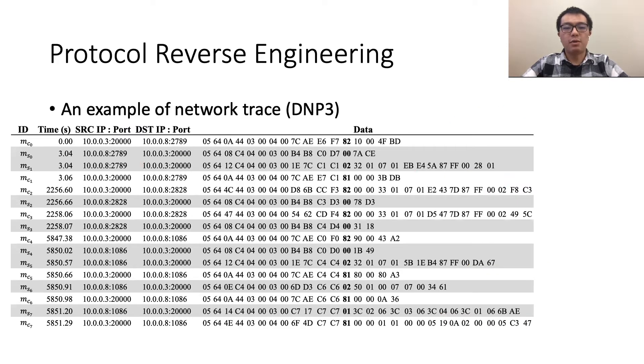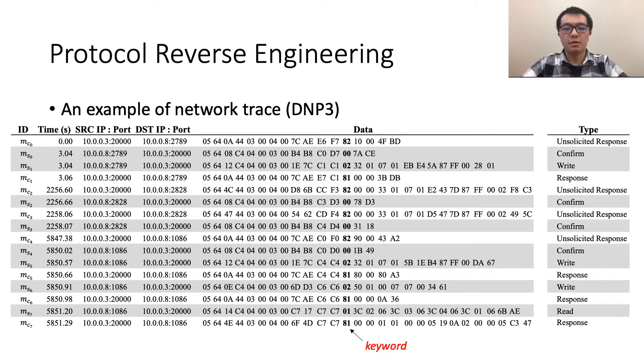Let's look at an example trace of DNP3. Each row contains a message. The plain messages are from the client, and the shaded messages are from the server. The message data is composed of several fields. The bytes in bold are a specific field called the keyword, which denotes the message type. The message type is defined by the specification and unknown in the trace. Each message type has its own format, which defines the syntax of this type. The main goal of protocol reverse engineering is to infer protocol syntax and semantics.